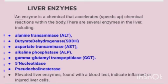An enzyme is a chemical substance that accelerates or speeds up chemical reactions within the body. There are several enzymes in the liver, including alanine transaminase (ALT), hydroxybutyrate dehydrogenase (HBD), aspartate transaminase (AST), alkaline phosphatase (ALP), gamma glutamyl transpeptidase (GGT), 5'-nucleotidase, and pseudocholinesterase. Elevated liver enzymes found with a blood test indicate inflamed or injured liver cells.